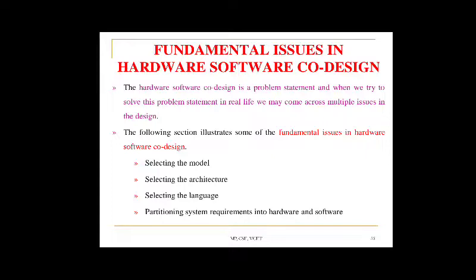The last fundamental issue is partitioning system requirements into hardware and software. It may be possible to implement system requirements in either hardware or software — in embedded systems, software is called firmware. It is a tough decision to figure out which to opt for. Various hardware-software trade-offs are used for making this partitioning decision. These four aspects — selecting the model, selecting the architecture, selecting the language, and partitioning — are the fundamental issues in hardware-software co-design.